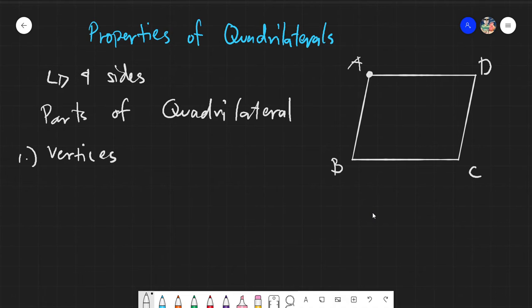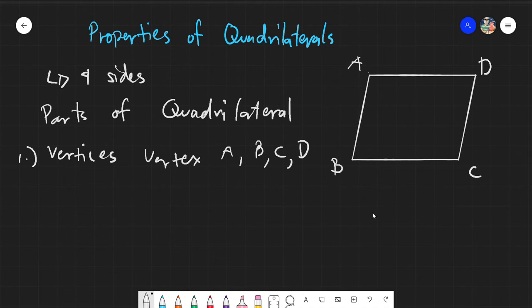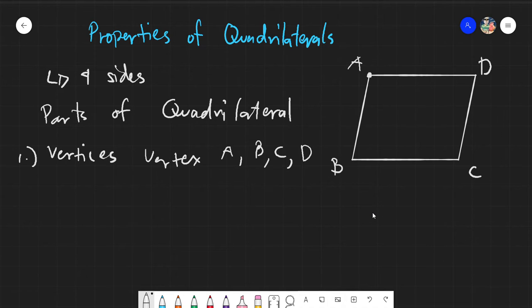We can name these as vertex A, B, C, and D. Basically, these vertices are just simply points — they are just locations of a specific point. We also have by definition the concepts of opposite and adjacent. Opposite vertices are a pair of vertices that are opposite each other.